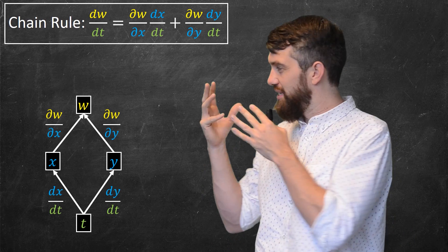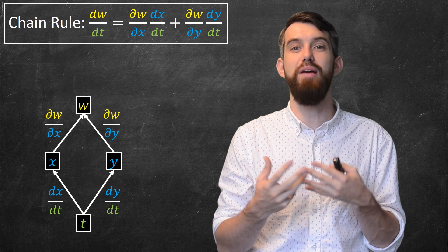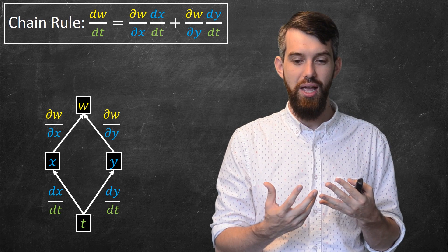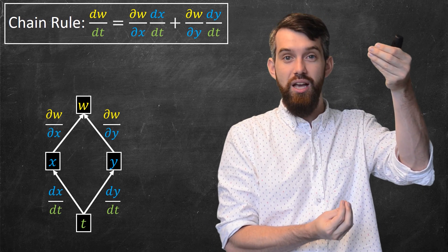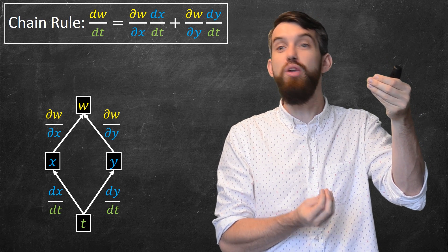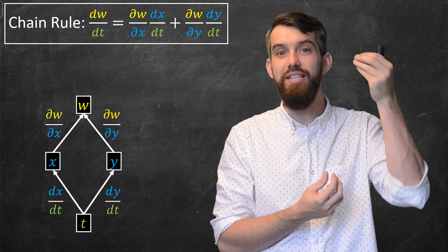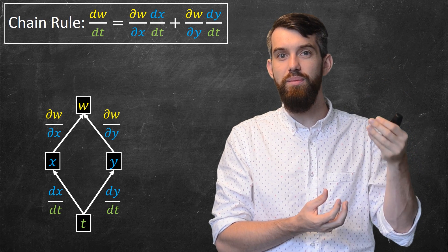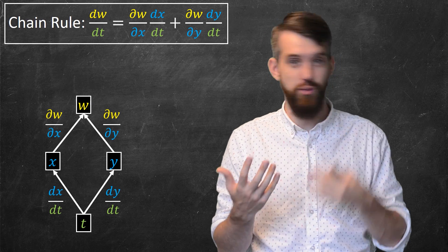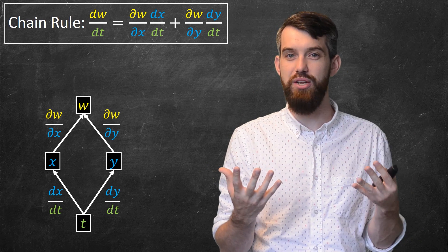Note that in this formula, sometimes you use the single variable derivative d notation, sometimes the partial derivative notation, depending on what you're doing. When you think about w and t — w is a single output and t is a single input — so dw/dt is a full single variable derivative. But the change in w with respect to x is a partial derivative, since w depends on many different things.